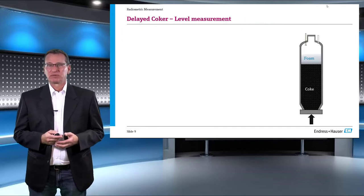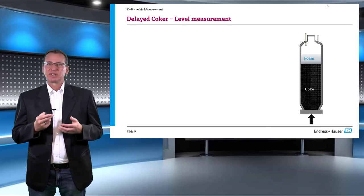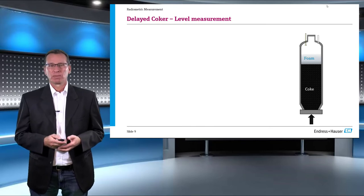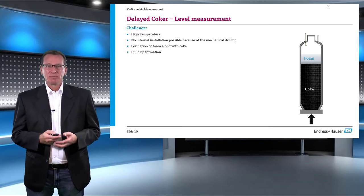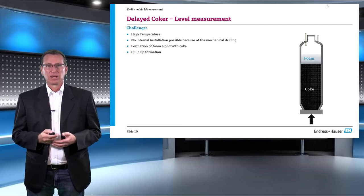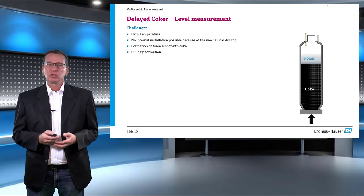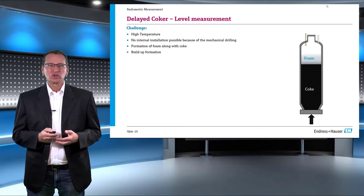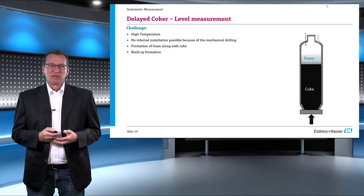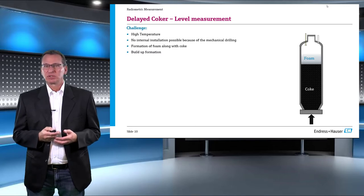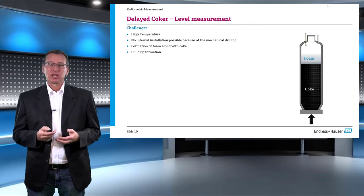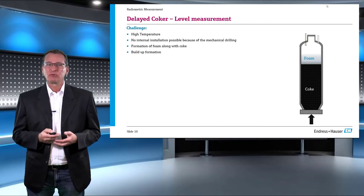Let's move on to the level measurement itself. Since we have discussed the process in depth already, let's list the measurement challenges in the coke unit. The high temperature inside the drum is a major hindrance for most level measurement technologies available. The large internal drill used for decoking rules out all measurement technology that needs to be in contact with the process. The formation of foam is very unique to this process and needs to be handled along with the level control. Buildup formation after decoking also needs to be identified for efficient cleanup.